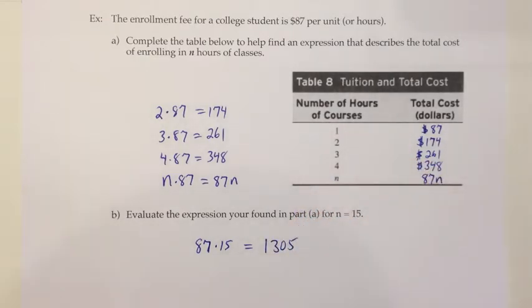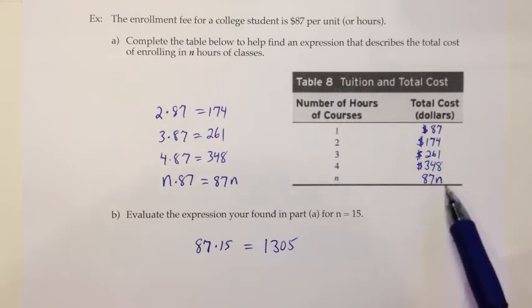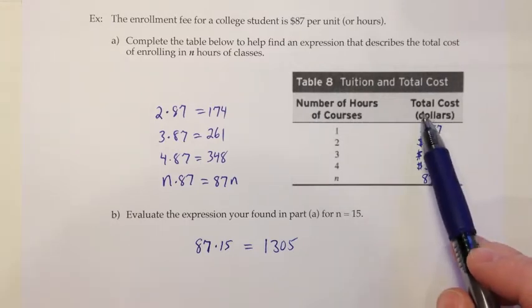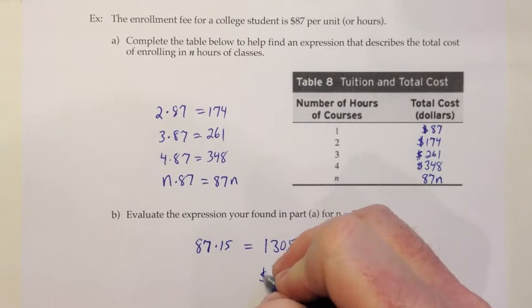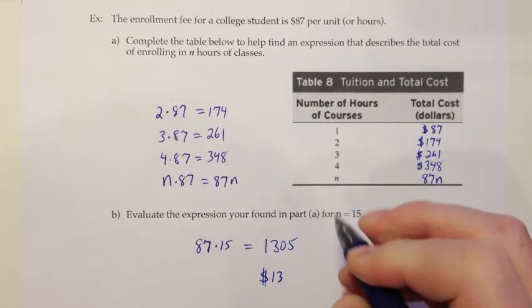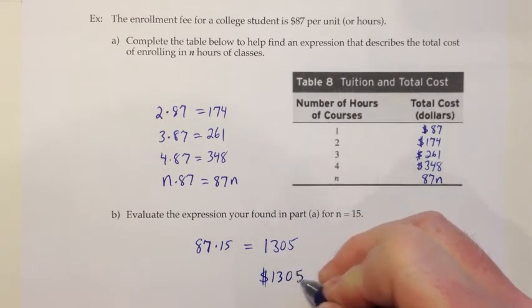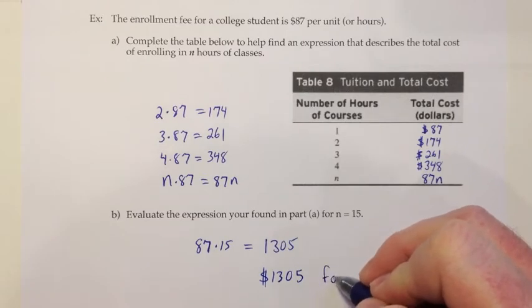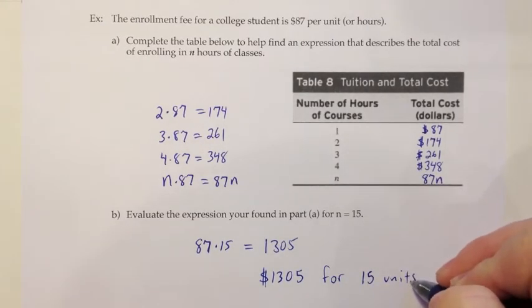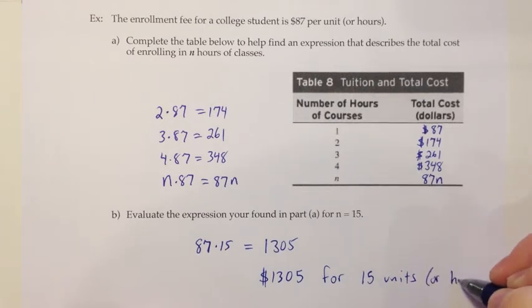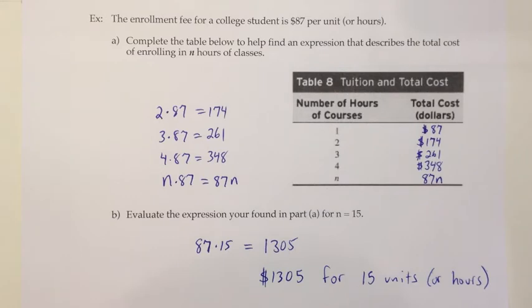If a student is taking 15 units, that should be $87 times that n of 15. And 87 times 15 is 1305. That would be the number, but we're working in the context of an application, so we always want to put the units. We're calculating 87n, which is an expression for the total cost, which is in dollars. So it's going to cost $1,305 for 15 units or hours.